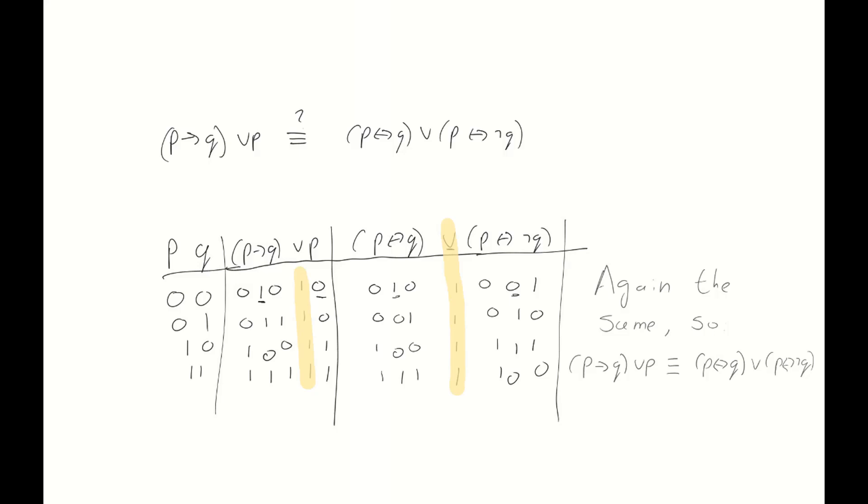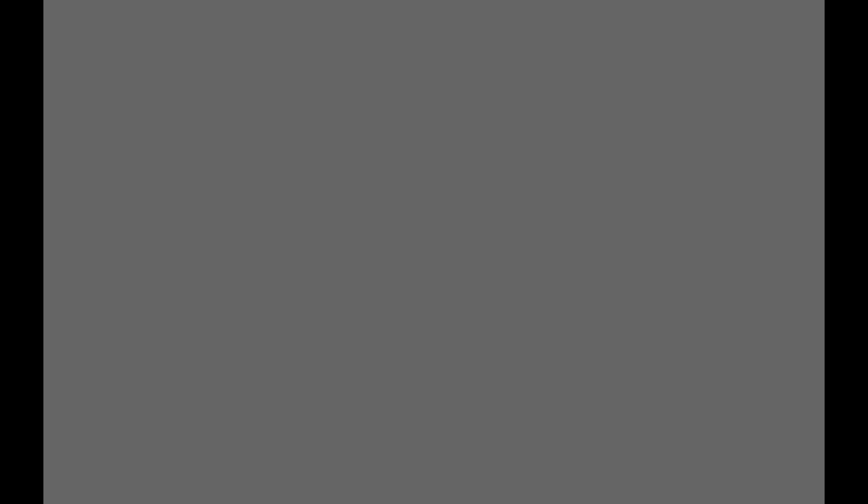Let's take a look at one final example. So finally, let's consider this third and final set of propositions. Not (P or Q) - is that equivalent to not P or not Q?